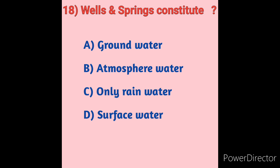Question 18: Wells and springs constitute which type of water? Option A: Groundwater, Option B: Atmospheric water, Option C: Only rain water, Option D: Surface water. Water in springs, seeps, and wells generally originates as rainfall that has soaked into the soil and percolated into underlying rocks. A spring is a natural outflow of water from an underground supply to the ground surface. Wells and springs constitute groundwater. Option A — groundwater — is the correct answer.